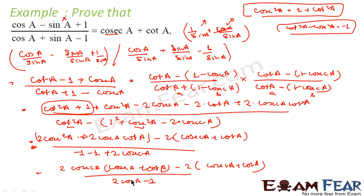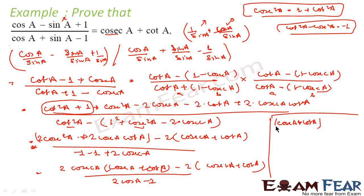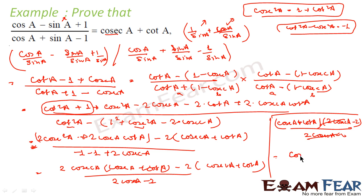So you see, this is 2·cosec²A minus 2 in both numerator and denominator — this is common. The (2·cosec²A minus 2) cancels, and we get cosec A plus cot A. And that is what we were supposed to prove. We have proved it.